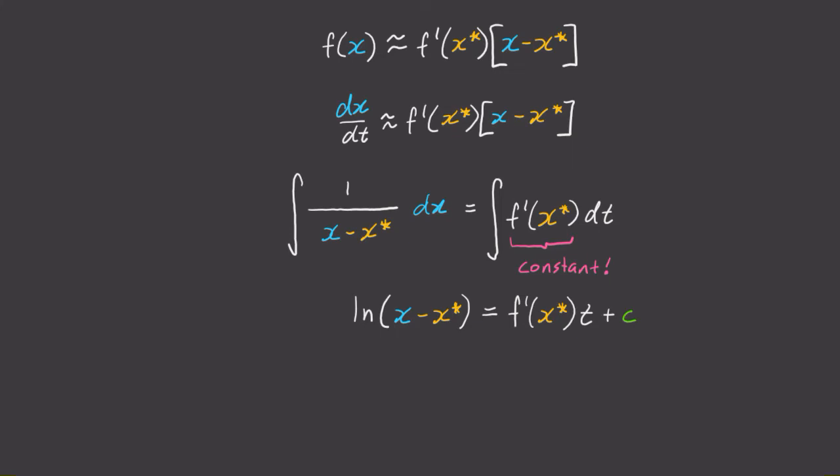Then, if we e to the power of both sides to get rid of that log term, then we'll get the solution x minus x star is equal to some constant, which I'll call A, times e to the power of f dash of x star times t.